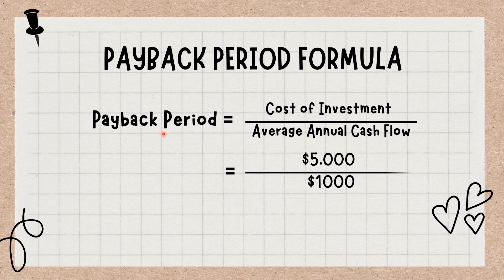For example, if solar panels cost $5,000 to install and the savings are $1,000 each year, it would take 5 years to reach the payback period. In most cases, this is a pretty good payback period, as experts say it can take as much as 8 years for residential homeowners in the United States to break even on their investment.